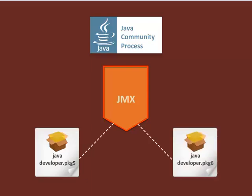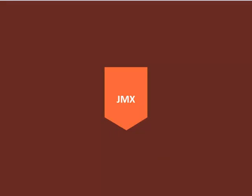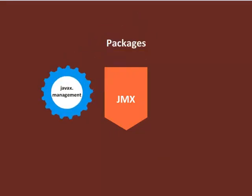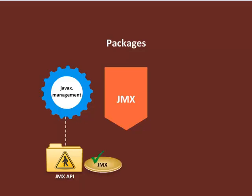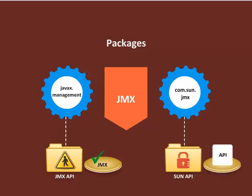In JDK versions 5 and 6, JMX technology was developed as a Java Specification Request, or JSR. The JMX implementation is composed of the following packages: the java.management and sub-packages, which is the public JMX API package whose evolution is governed by JMX specifications, and the com.sun.jmx and sub-packages, which is a private Sun implementation and constitutes a private API subject to changes.